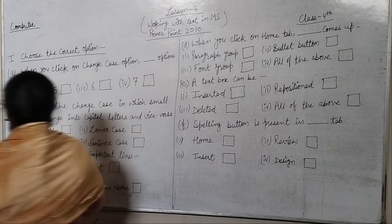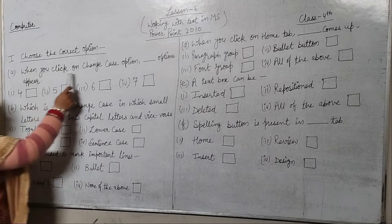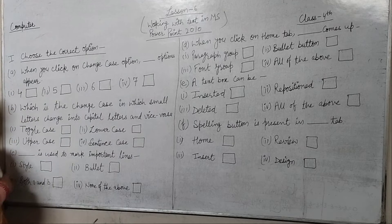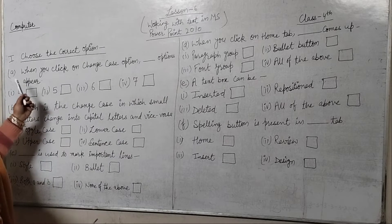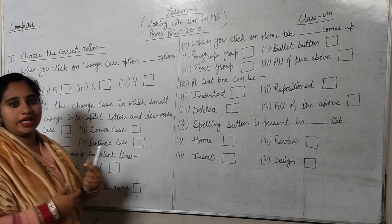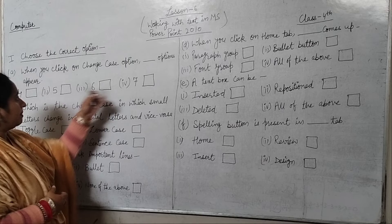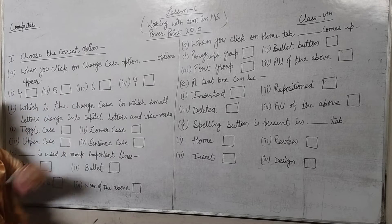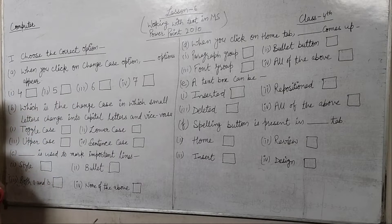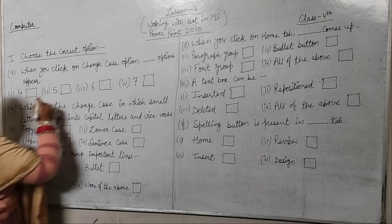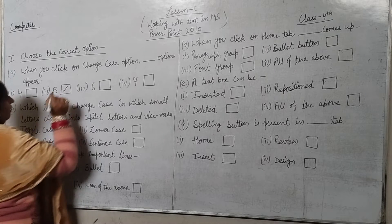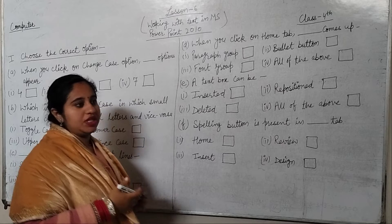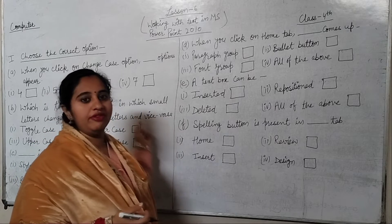When you click on the Change Case option, how many options appear? 4, 5, 6, or 7? The right answer is 5. When you click on Change Case, you will see 5 options: lower case, upper case, and others.